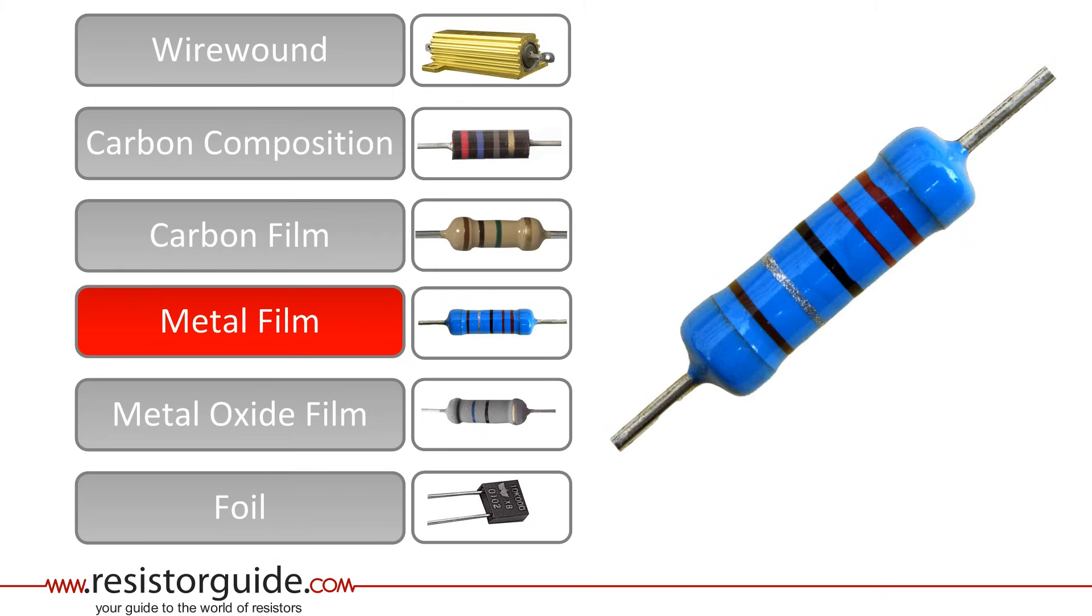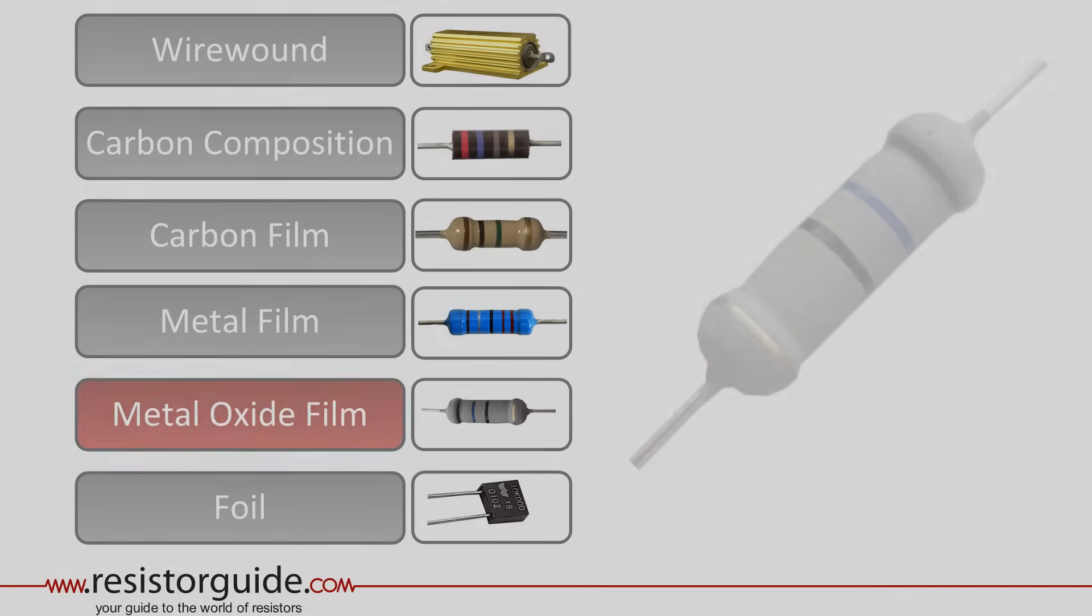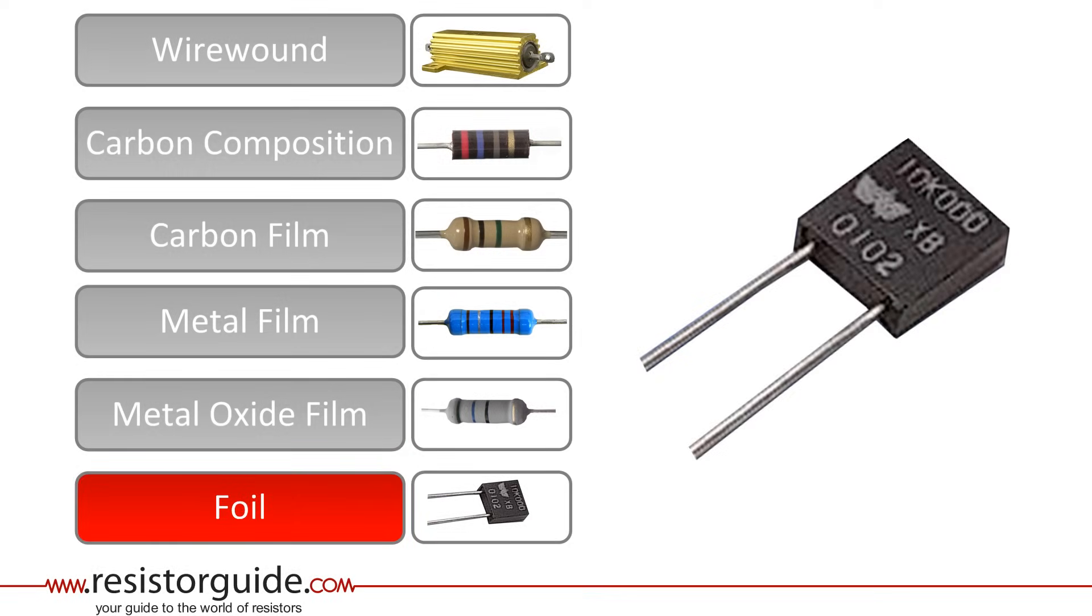Metal film resistors have a similar construction as carbon film resistors, but have a metal layer instead of a carbon film. They have a better accuracy, a lower temperature coefficient and a fairly good stability. Metal oxide film resistors are even more durable and have a higher temperature resistance and reliability than the metal film resistors. Foil resistors have a resistive element of a thin metallic foil of several micrometers thick. They have the highest available precision and stability today.